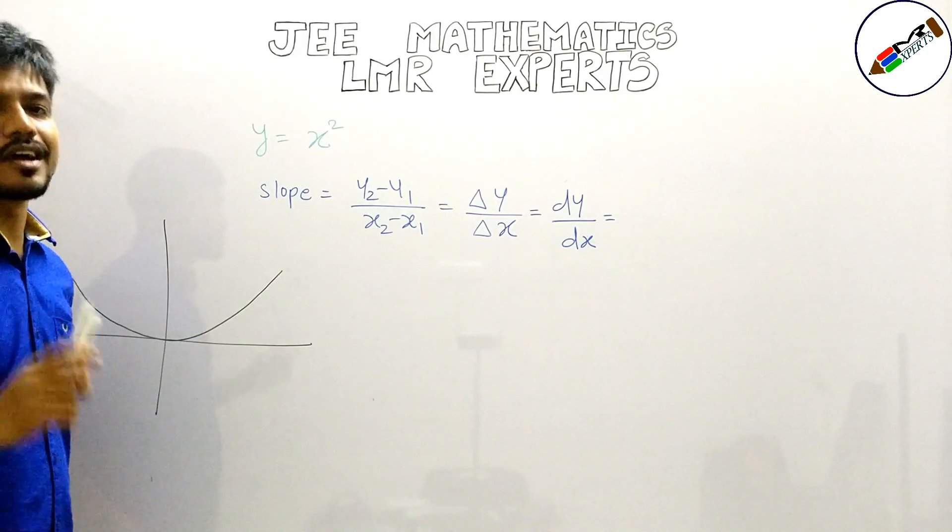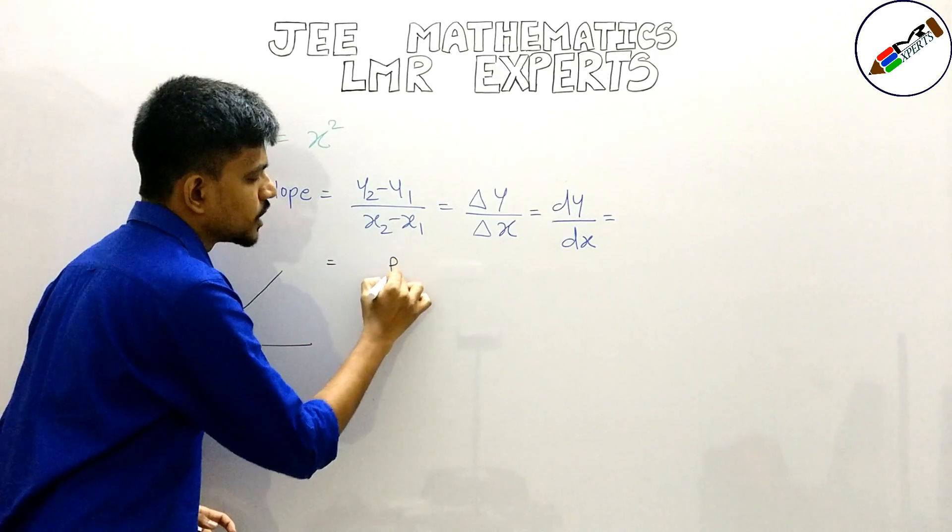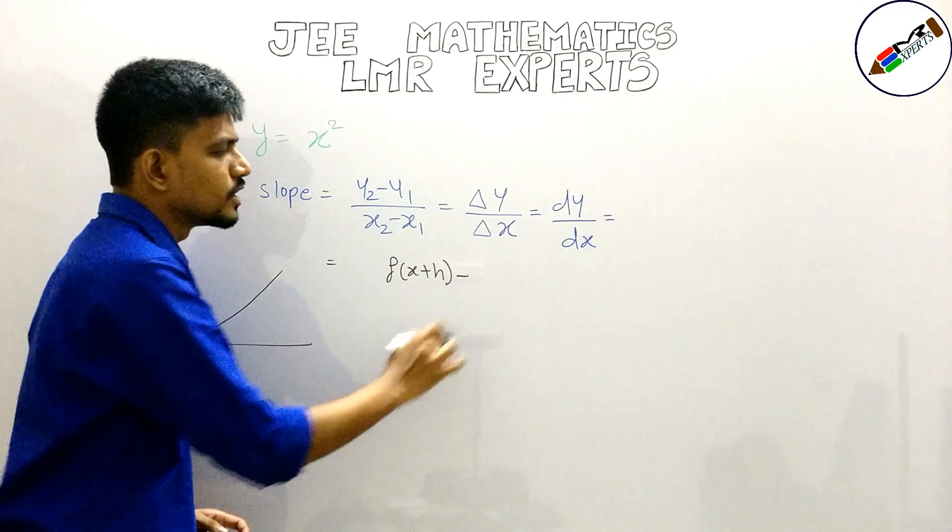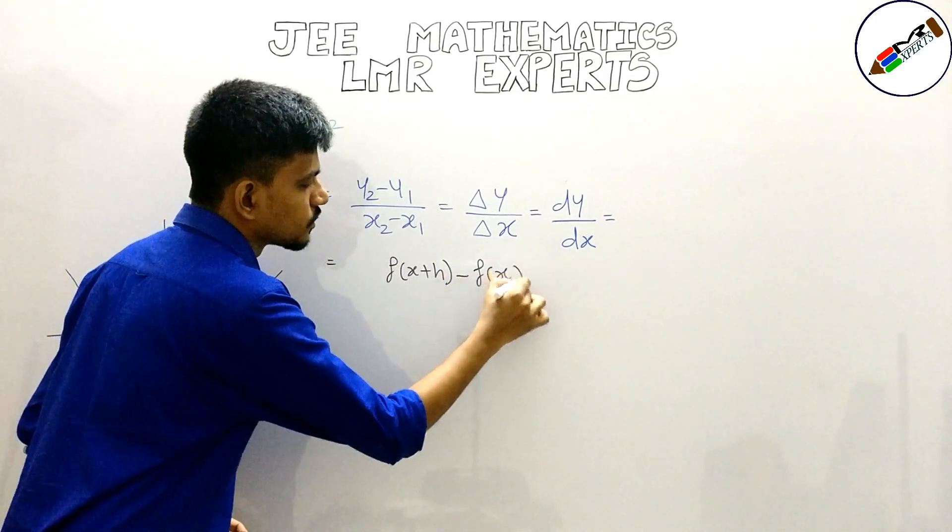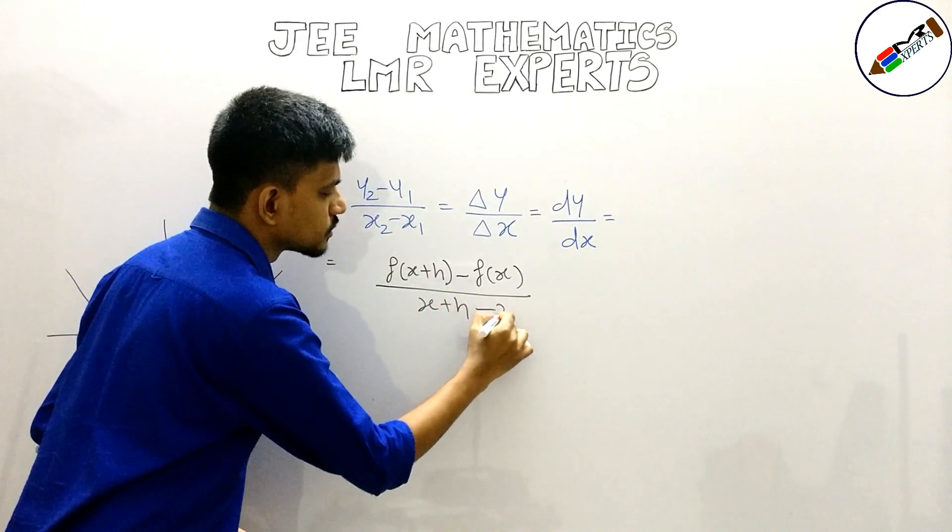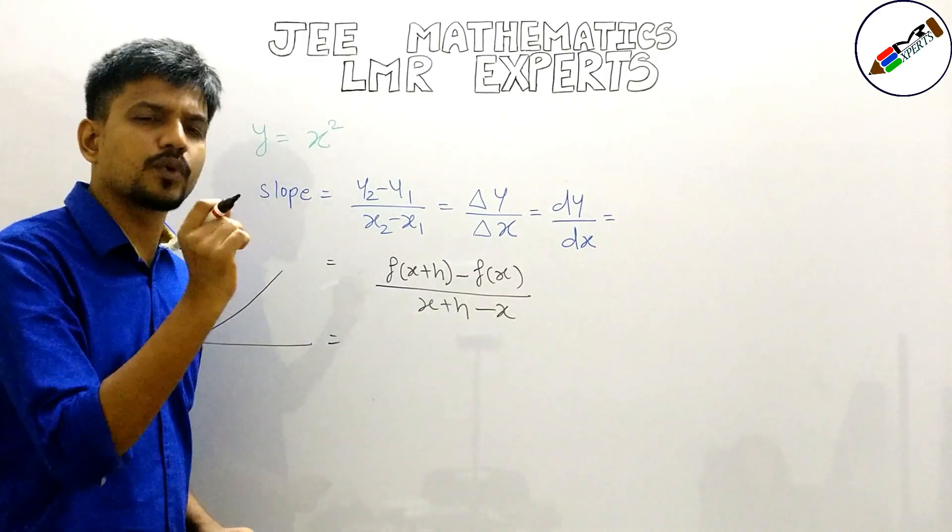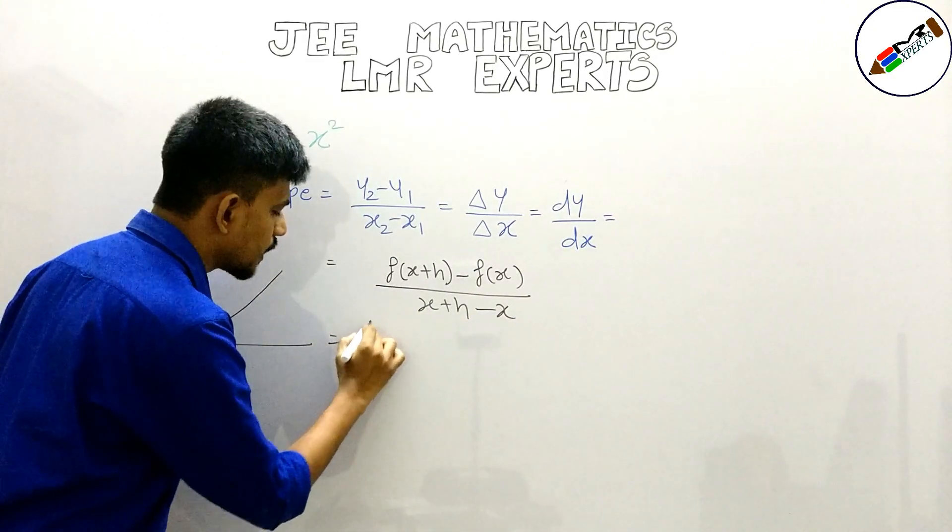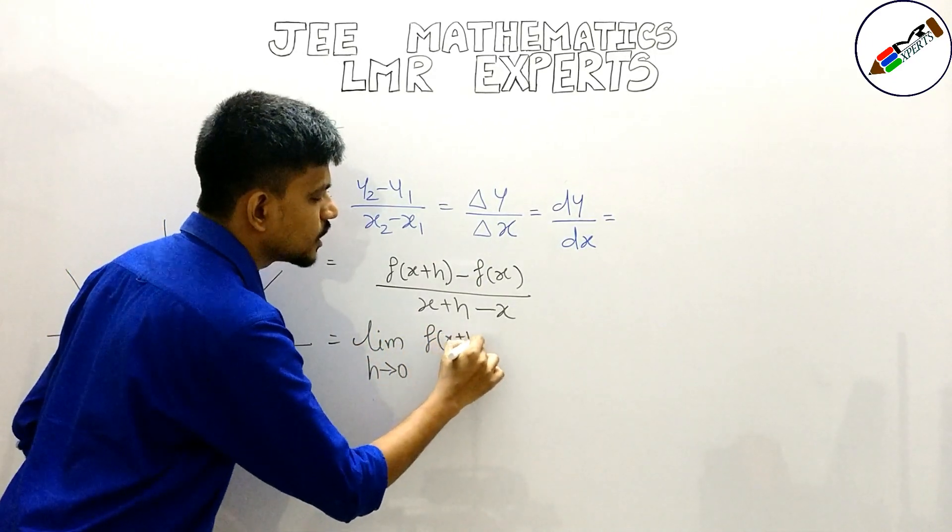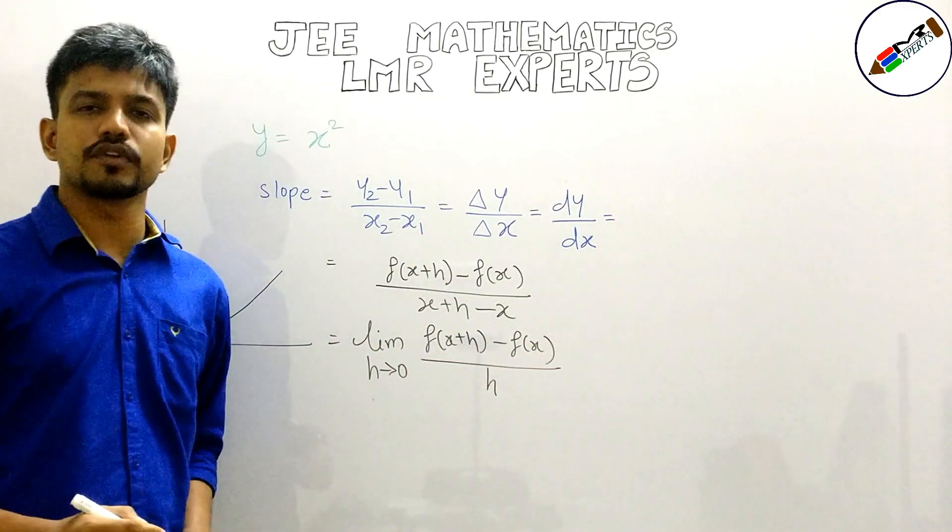Now what I might try to do is apply the first principle of derivatives which could be written as y2 is f of x plus h minus y1 is f of x, wherein x2 was x plus h and x1 was x. But when we see the difference, x gets cancelled and h is very very small. I will have to write down limit h tends to 0. And the function of x plus h minus function of x upon h is your first principle of derivatives.